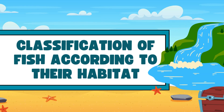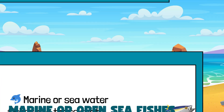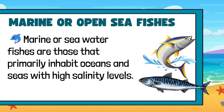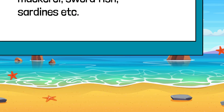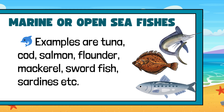Classification of fish according to their habitat. Marine or open sea fishes are those that primarily inhabit oceans and seas with high salinity levels. Examples are tuna, cod, salmon, flounder, mackerel, swordfish, and sardines.